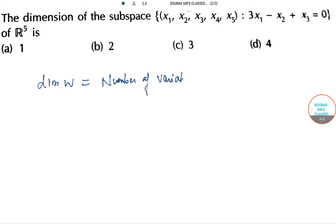Number of variables here is 5 because we have x1, x2, x3, x4, x5, and the restriction is only 1. So 5 minus 1 equals 4. If we let this subspace to be W, the dimension of W is given by 4, so option D is correct. Thank you.